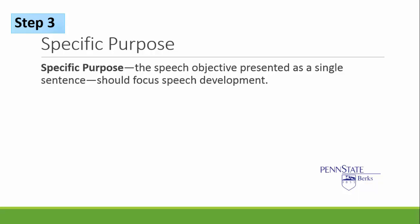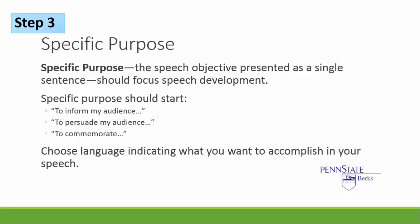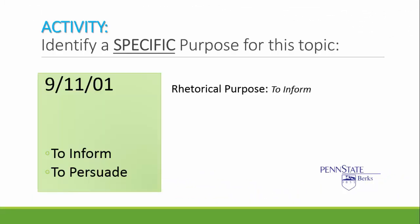Our third step on our path to effective public speaking is to identify a specific purpose. The specific purpose is the speech objective presented in a single sentence, and it focuses on the speech development. The specific purpose allows the speaker to continue to narrow the focus of your speech. When crafting your specific purpose, please make sure that you choose language indicating what you hope to accomplish within your speech. Additionally, it's important to note that all specific purposes begin with the rhetorical purpose. You will be asked to identify your specific purpose for the speech you are creating based on September 11, 2001. Pause the video now, taking note of the specific purpose I have chosen for my speech activity.